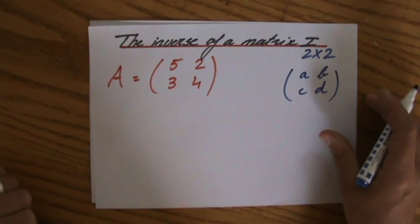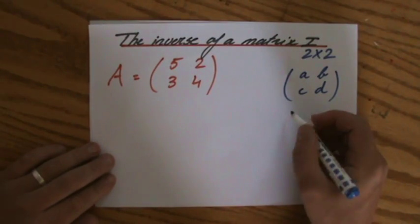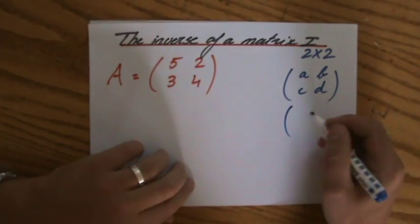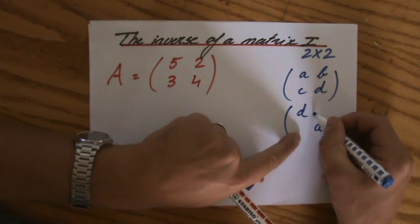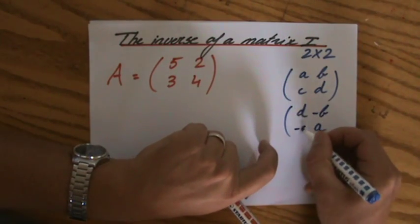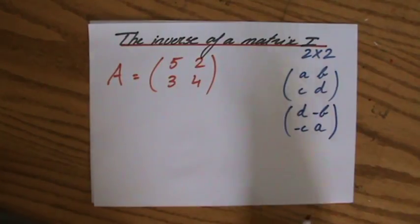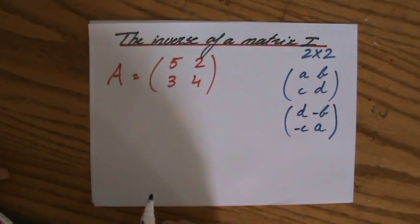Now, to find the inverse of a matrix, this is what you have to do. You swap A and D. So D goes there and A goes there. And you change the signs of B and C. That is something you, first of all, have to do.